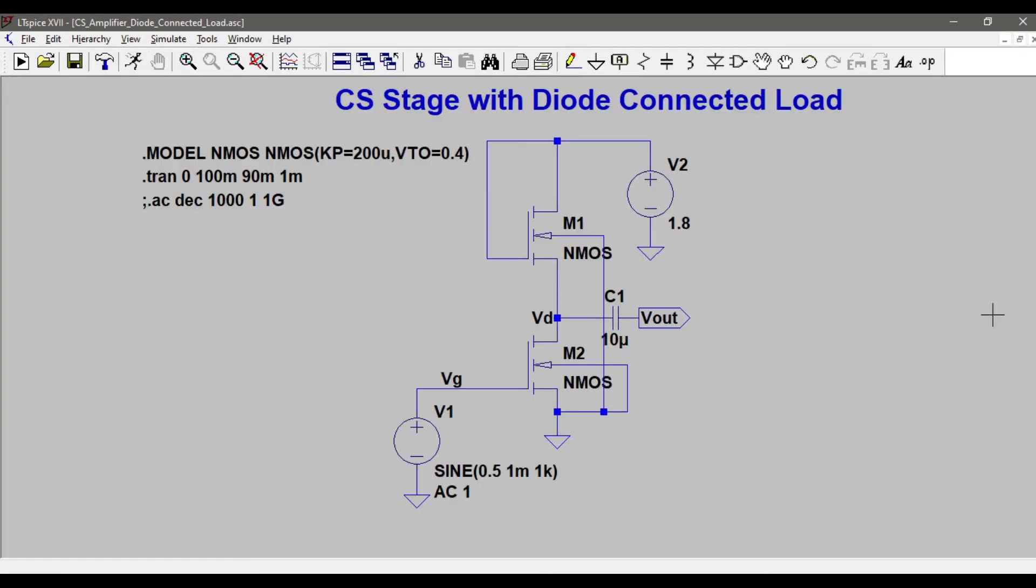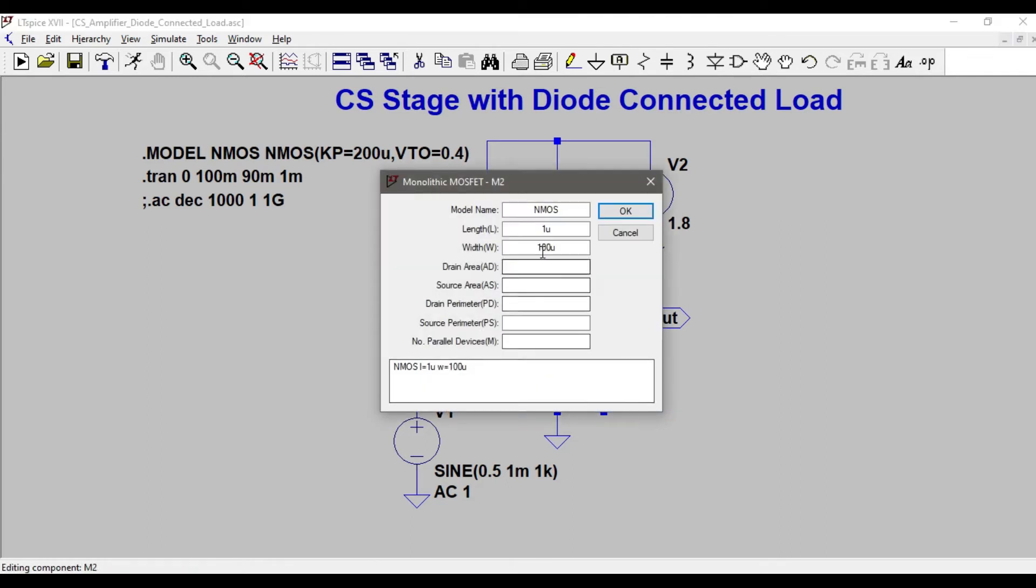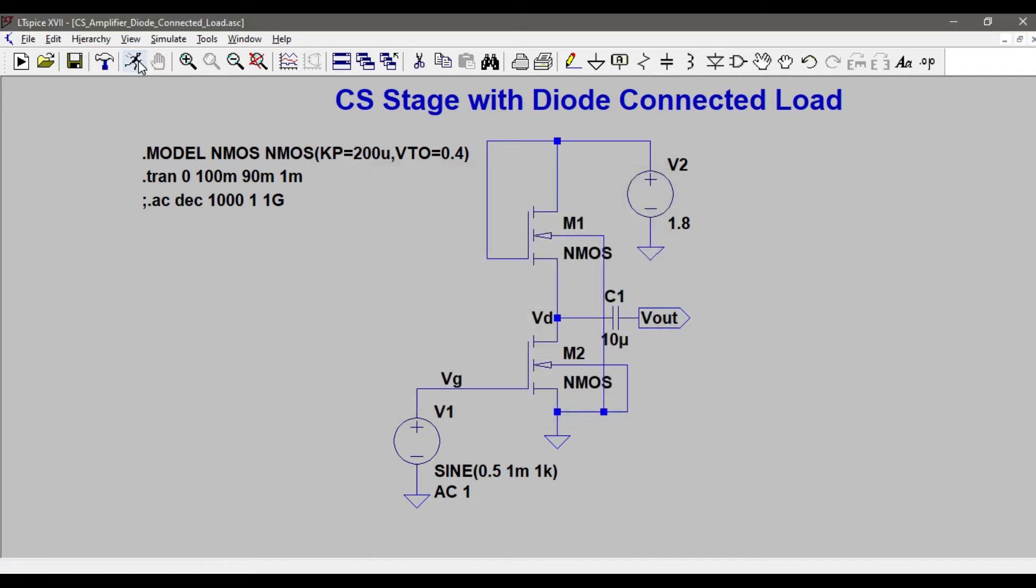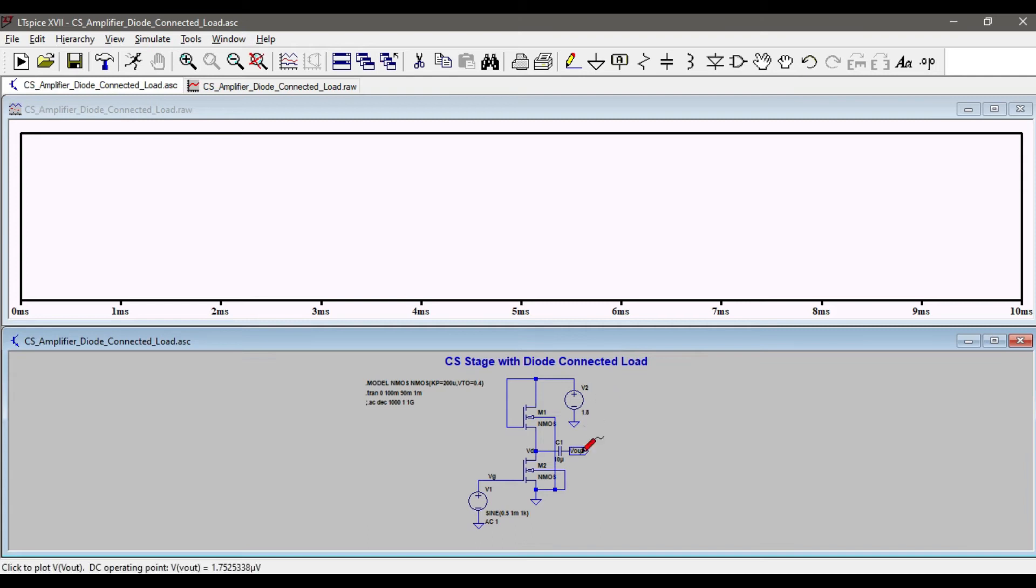So you might be asking, how can I increase the gain? Can I directly go and increase the W by L ratio? Let's try doing that. I'll make it 150 and run the simulation again. My gain was 10, and it has increased to 12.